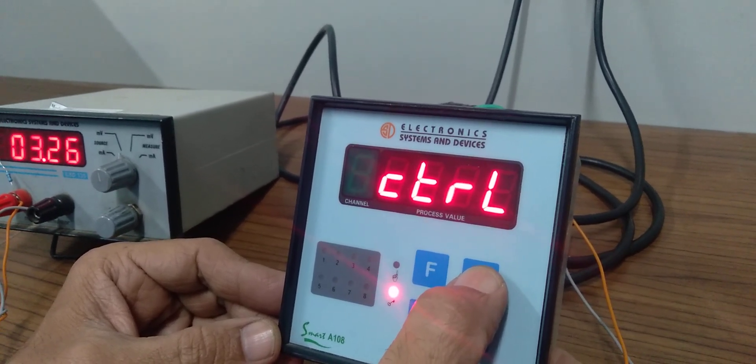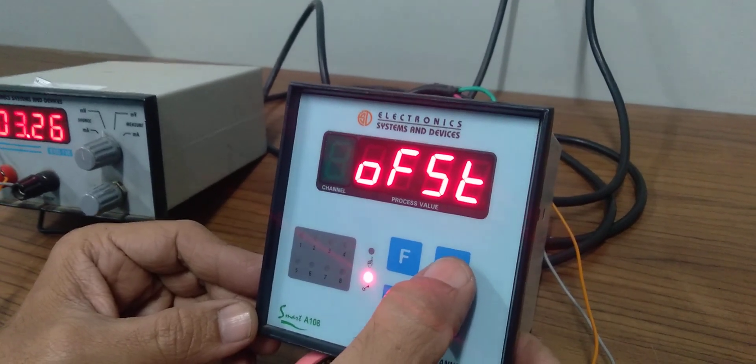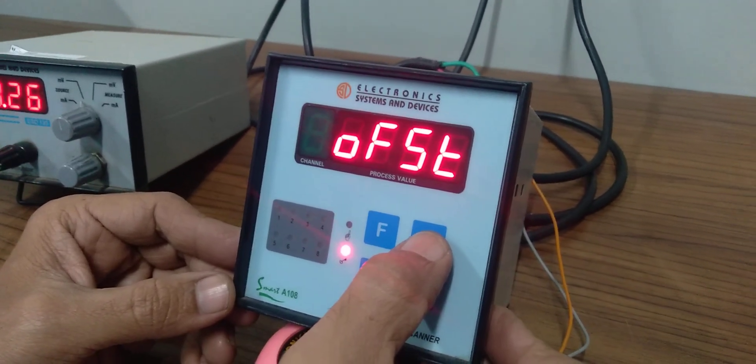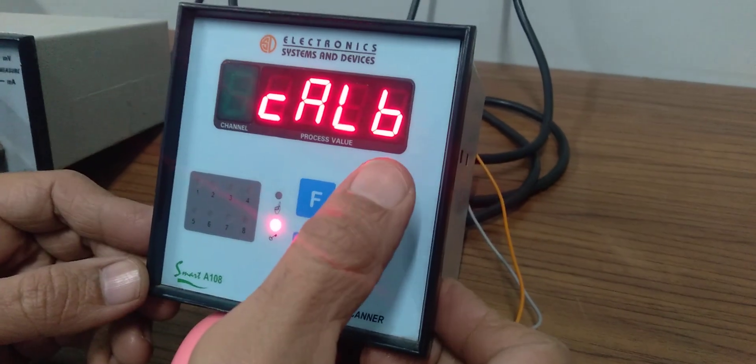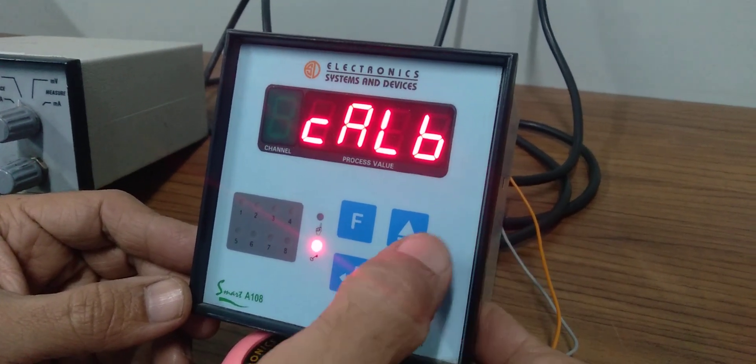Offset mode allows you to compensate if there's any error at any of the sensors. The offset can be plus or minus. There's also a calibrate mode.